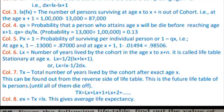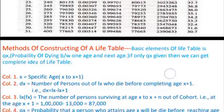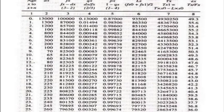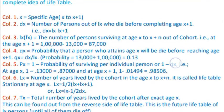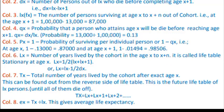px = 1 − qx, which is the probability of surviving for an individual. For example, at age x: 1 − 0.130 = 0.870, which is the surviving probability. So px tells about the surviving rate in probability terms, and qx tells about the death rate in probability terms, out of the cohort, from age x to x+1.